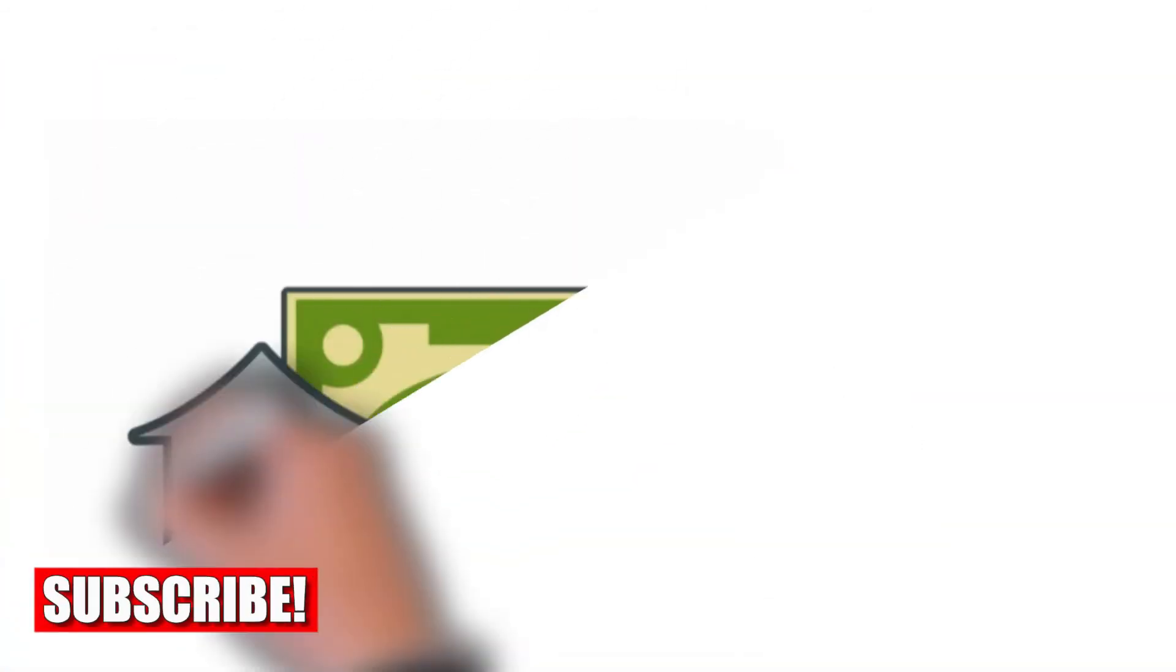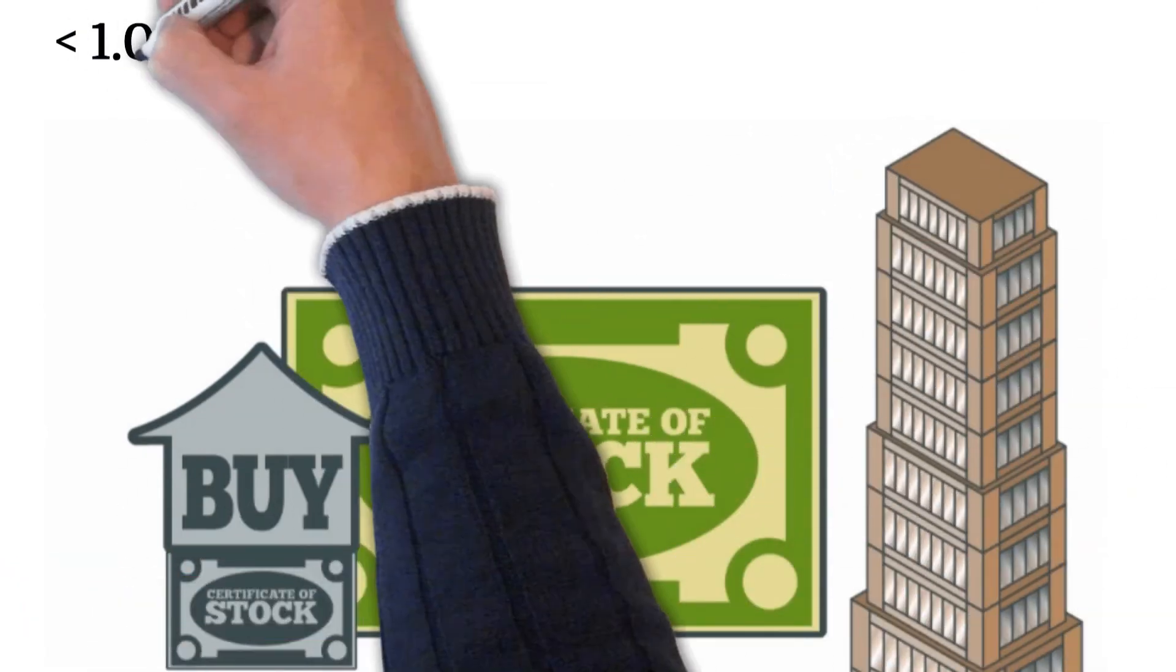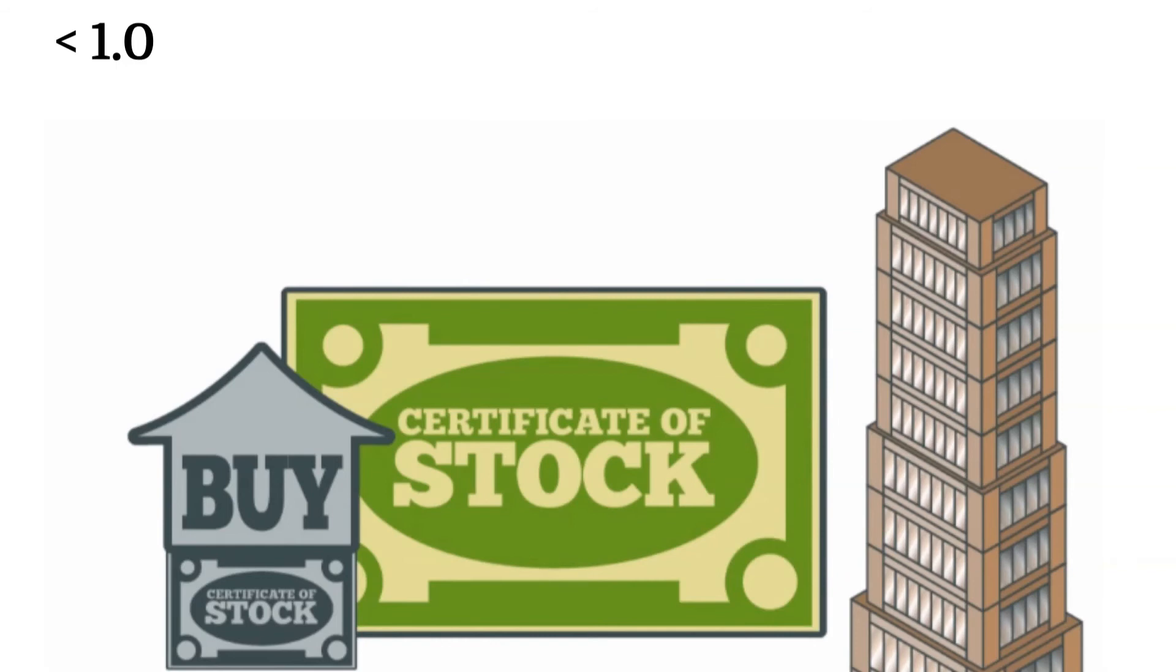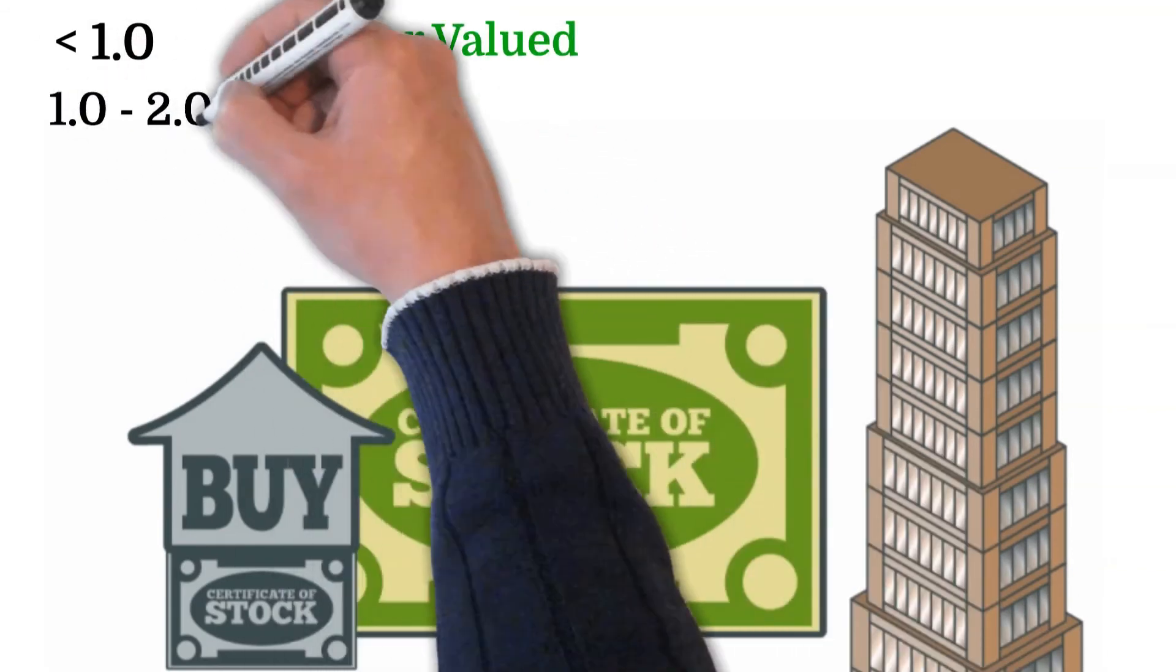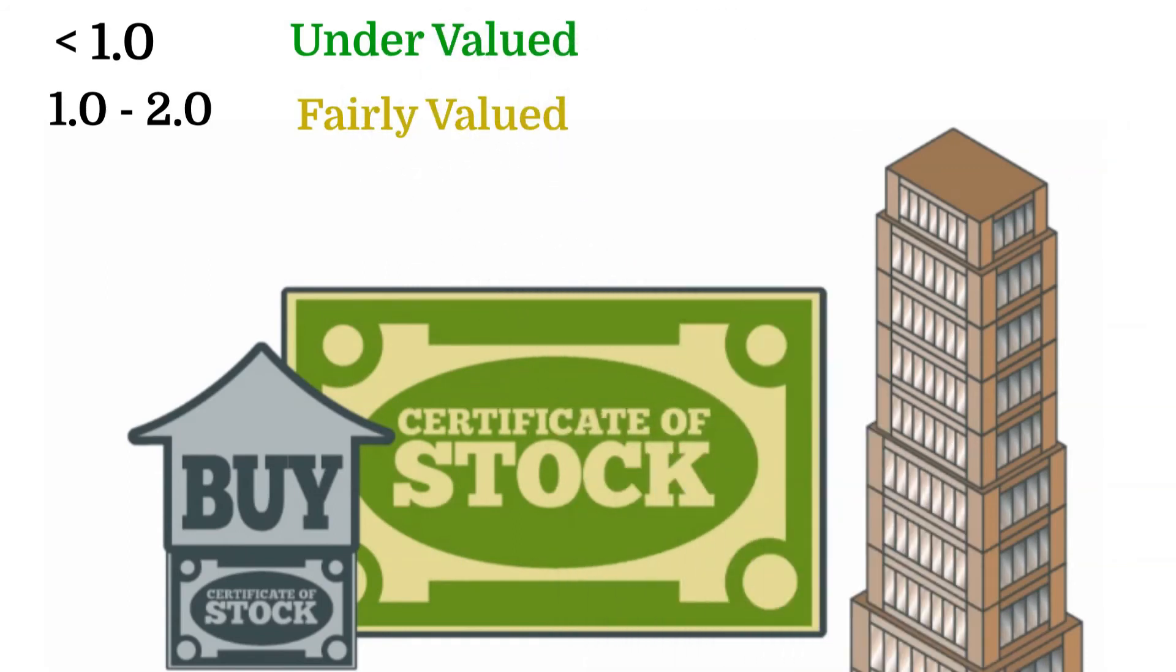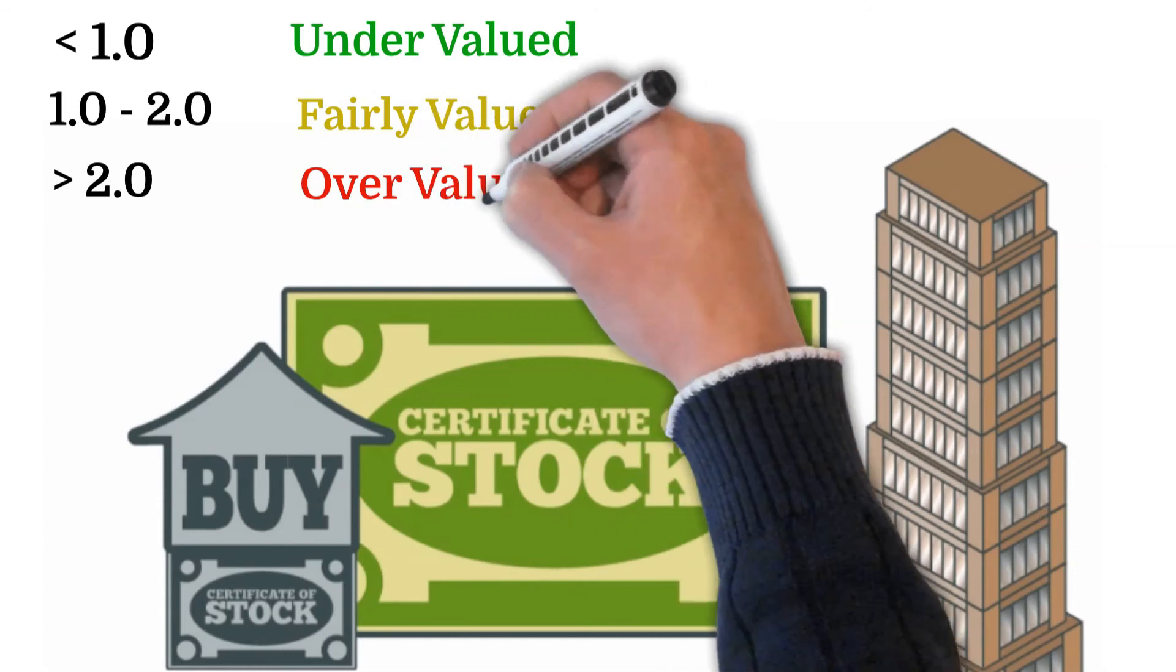To calculate PEGGY, use the same scale as the PEG ratio. A stock with a PEGGY ratio below 1.0 is typically considered undervalued, whereas stocks with PEGGY ratios between 1.0 and 2.0 may be considered fairly valued, and a stock with a PEGGY ratio greater than 2.0 is likely overvalued.